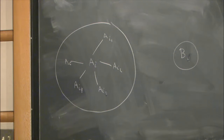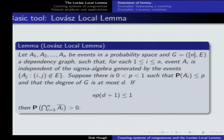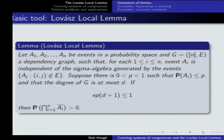The assumption made is that there's an upper bound P so that all events have probability at most P. If the degree of the graph times P times e is less than 1, then you can conclude that the probability of the intersection of the complements of the events is greater than 0. If the events were actually independent, that probability would just be a product of 1 minus the probability of each event. But in general the events are dependent, and if the dependence is limited sufficiently, you can still conclude the probability of the intersection of the complement is not 0. This quantity can be exponentially small in the number of events.